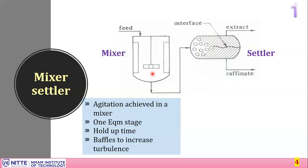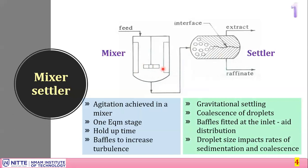If droplets are very small, settling time will be very large; if droplets are too large, mass transfer suffers and separation is poor. Operating with the proper droplet size is critical — coalescence of droplets is an important issue. Baffle arrangements in the settler break up the two layers so they can be separated. The raffinate from one stage can feed the next stage, enabling cross-current or counter-current multi-stage operation, though each mixer-settler unit acts as one equilibrium stage.